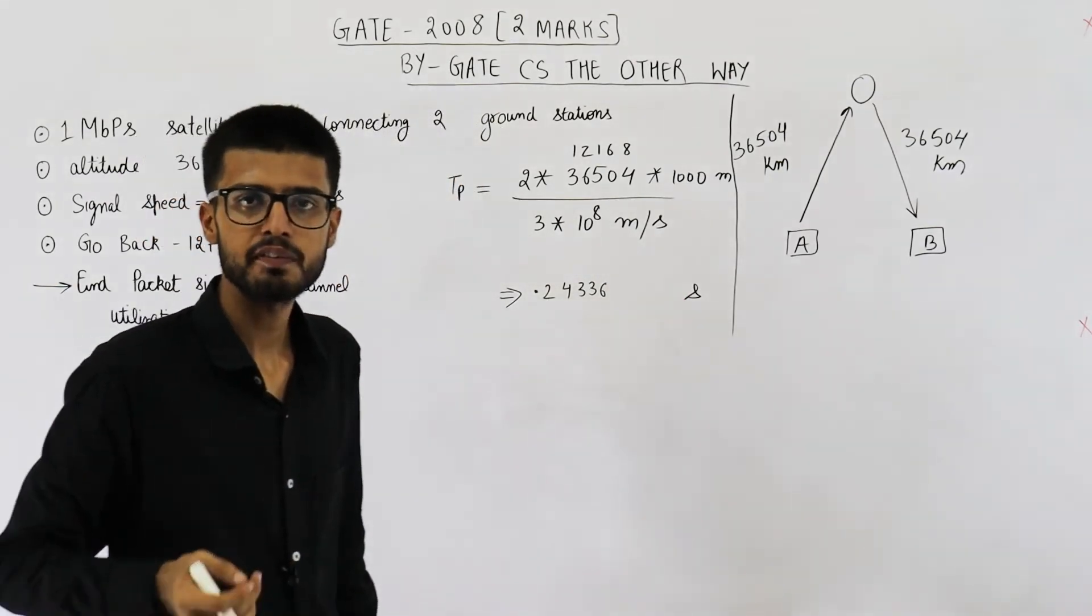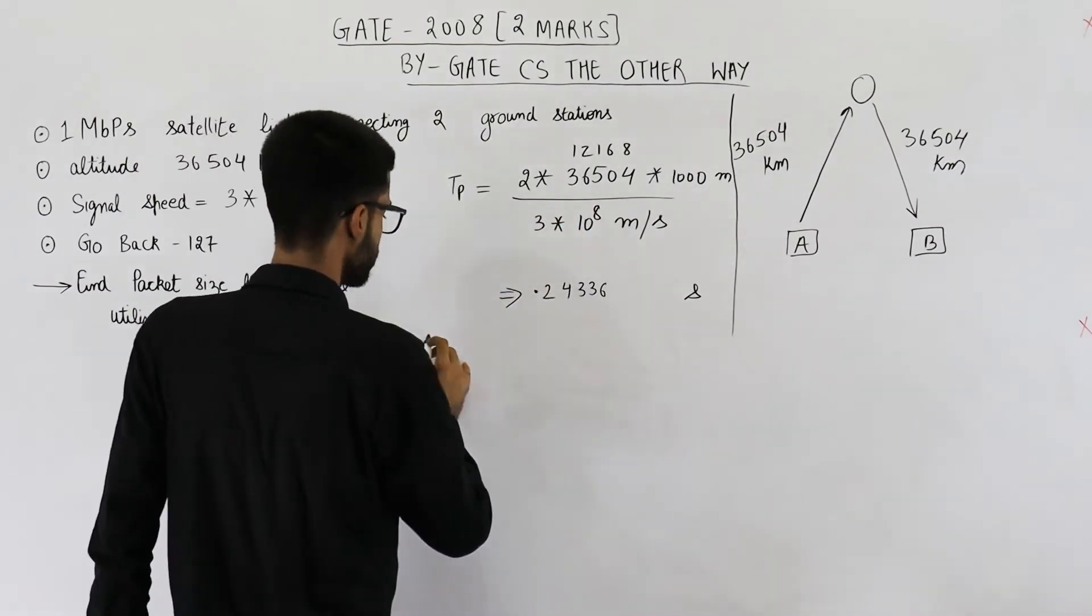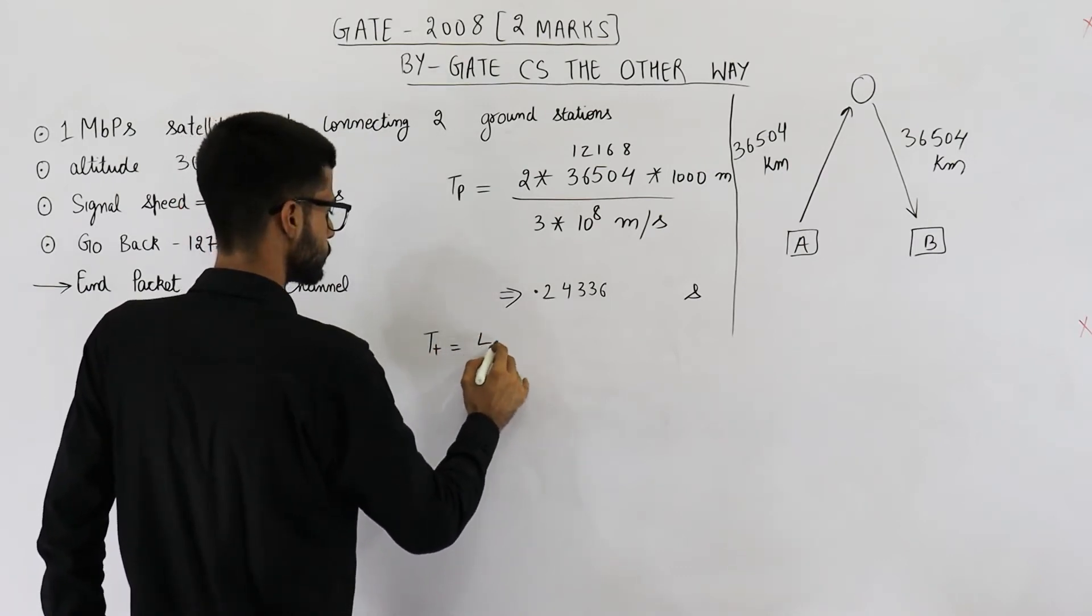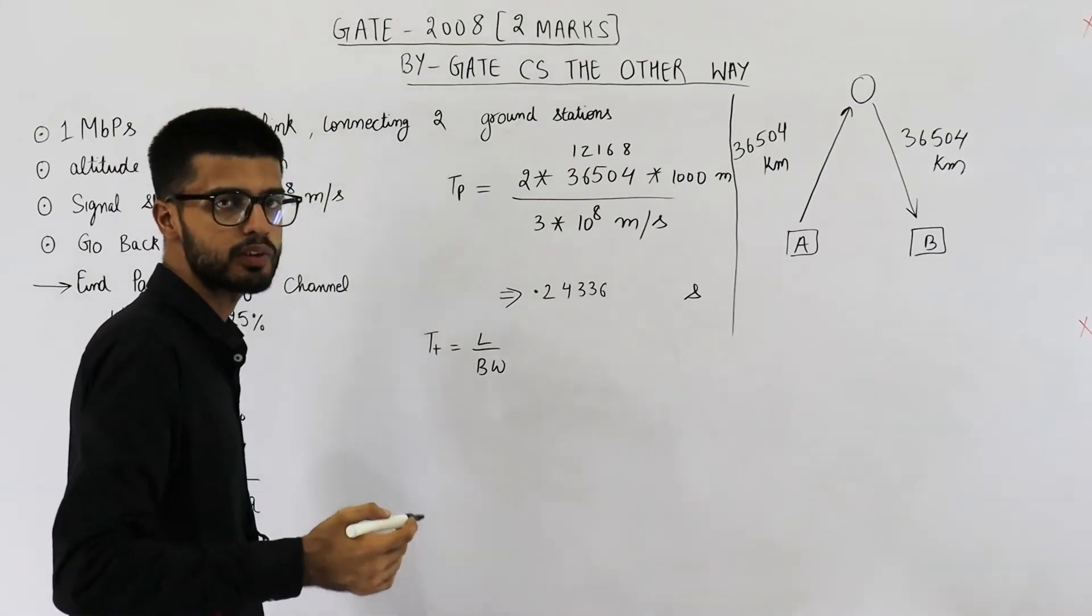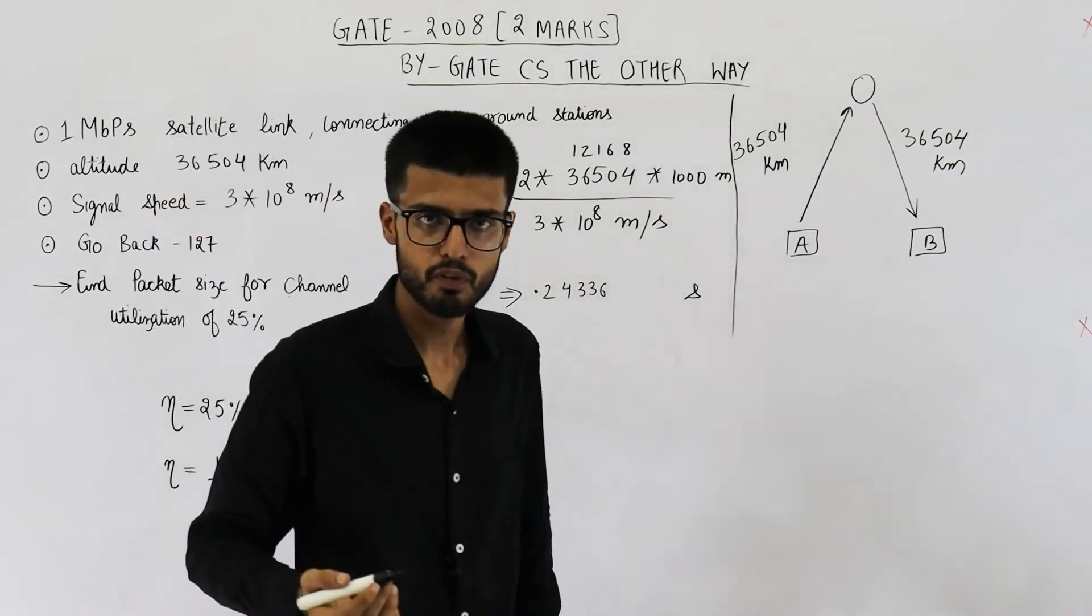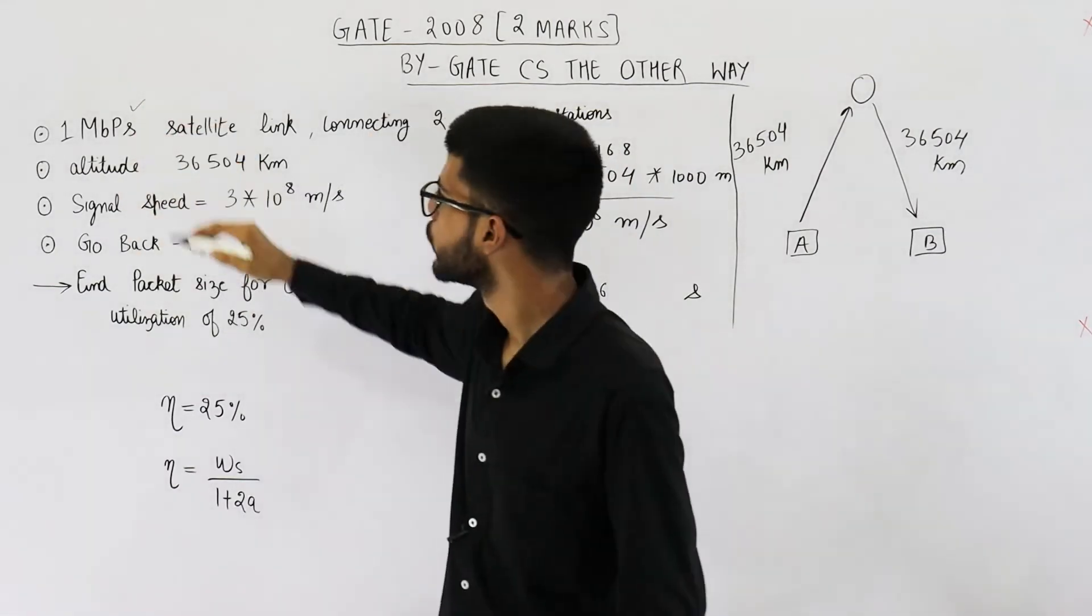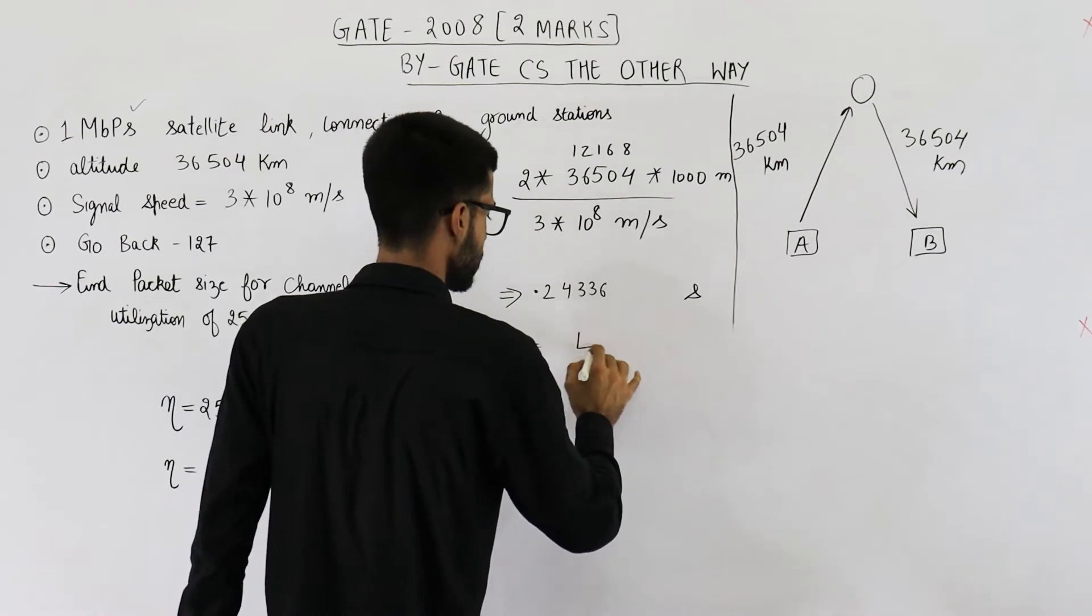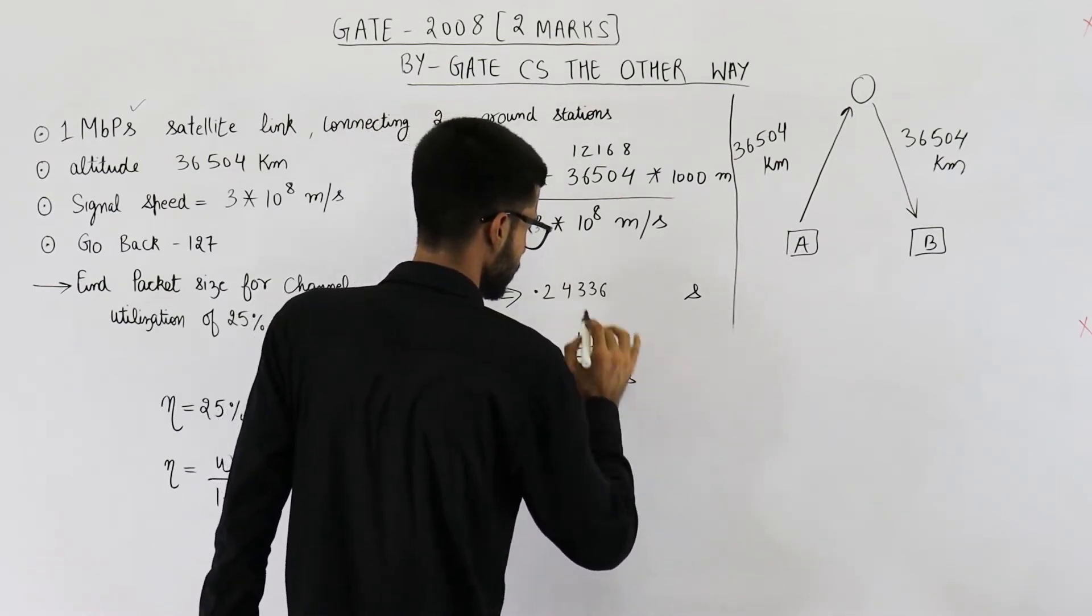Now let us find the value of transmission delay. Value of Tt will be length of the packet divided by bandwidth. Length of the packet is not given in the question. We actually need to determine the value of L. But bandwidth is given, which is 1 Mbps. So this will be L divided by 1 Mbps.